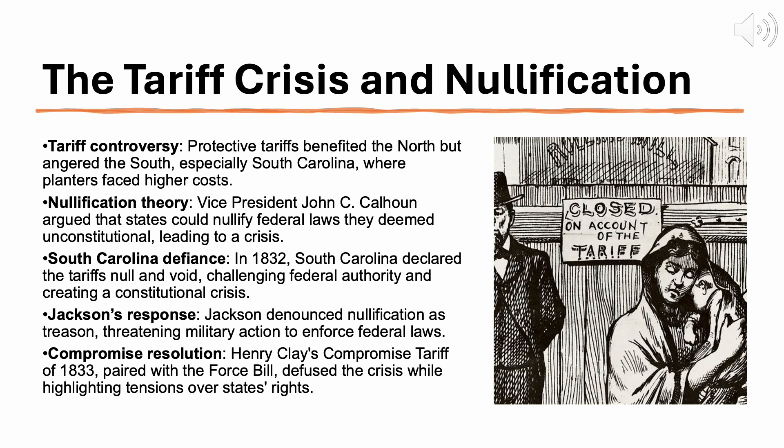Jackson, a southern cotton planter himself, was sympathetic to the economic plight of the South but was committed to preserving the Union. His vice president, John Calhoun, who had initially supported the tariffs, became the leading advocate for nullification — the idea that states had the right to nullify federal laws they deemed unconstitutional. In an anonymous publication known as the South Carolina Exposition and Protest, Calhoun articulated the theory of nullification, arguing that the Constitution was a compact between sovereign states and that states could refuse to enforce federal laws that overstepped the powers granted to the federal government. In 1832, South Carolina held a state convention and officially declared the tariffs of 1828 and 1832 null and void within the state, creating a constitutional crisis.